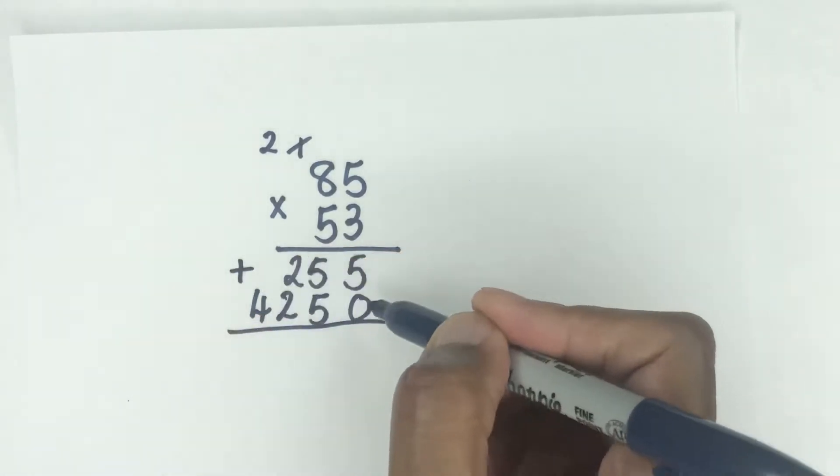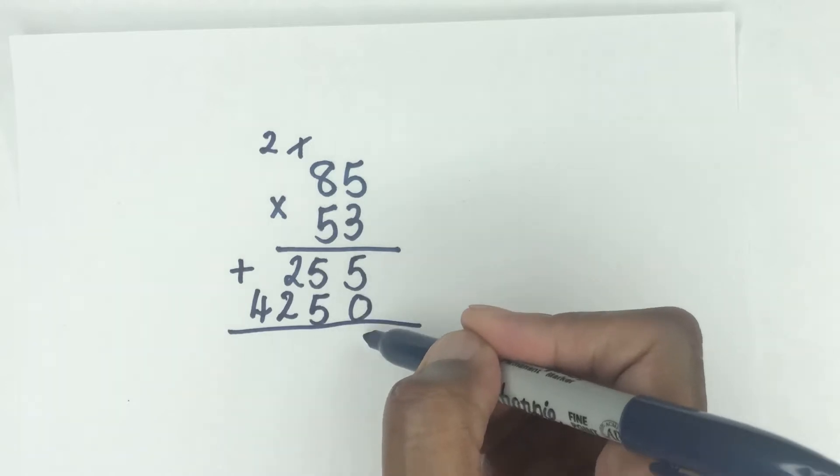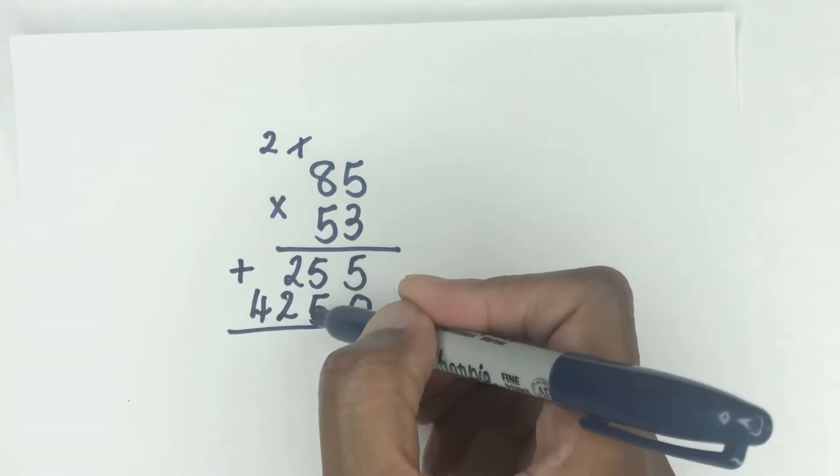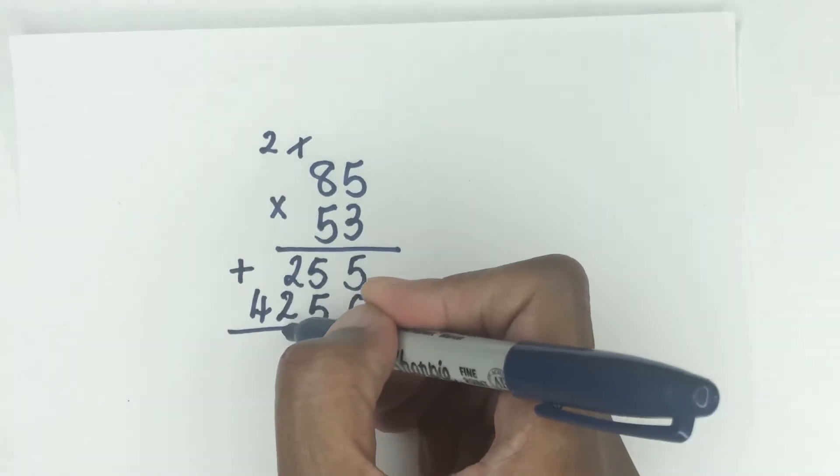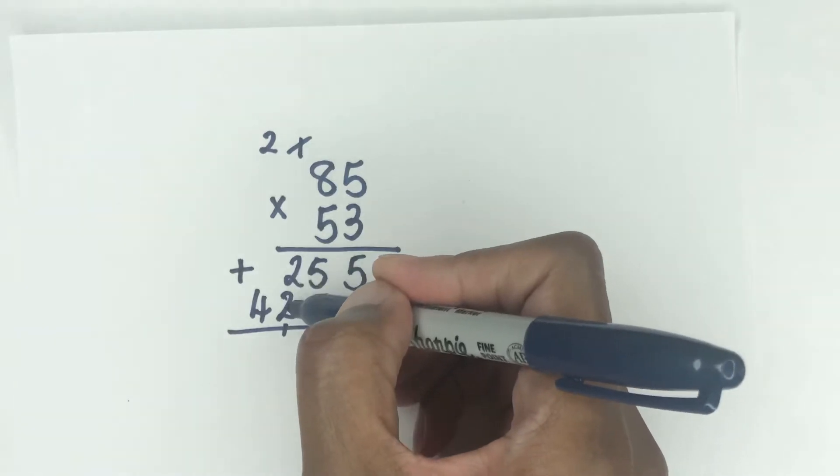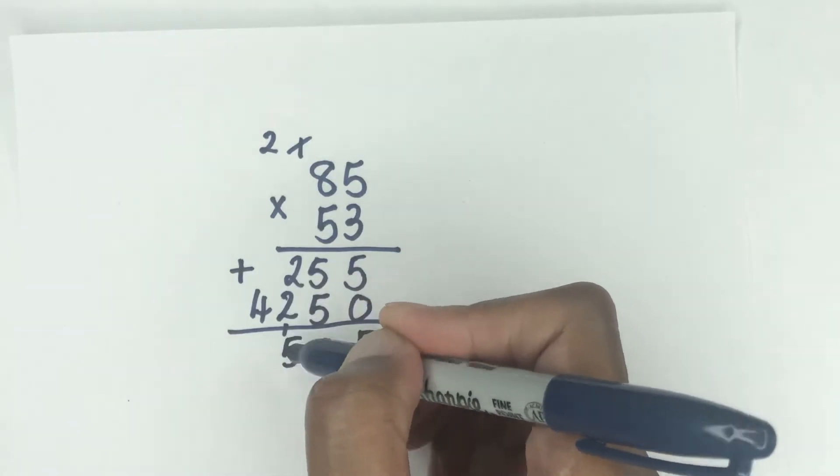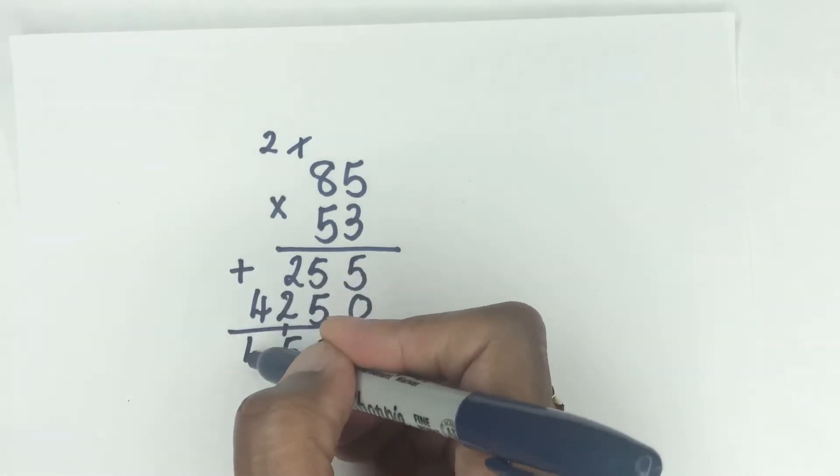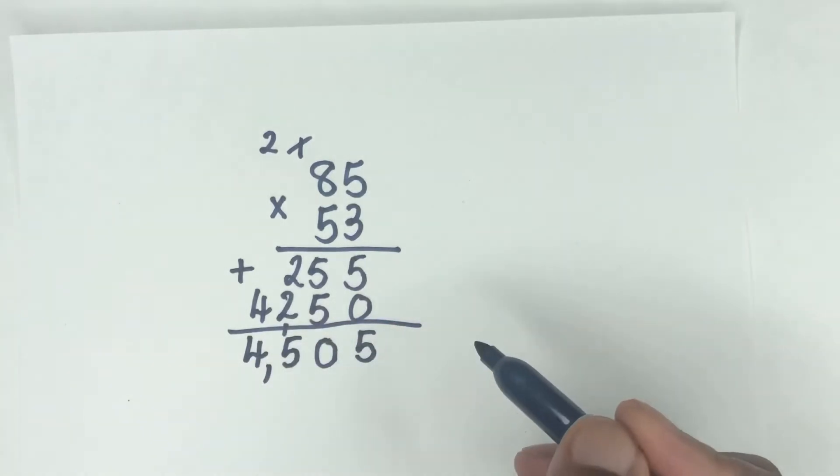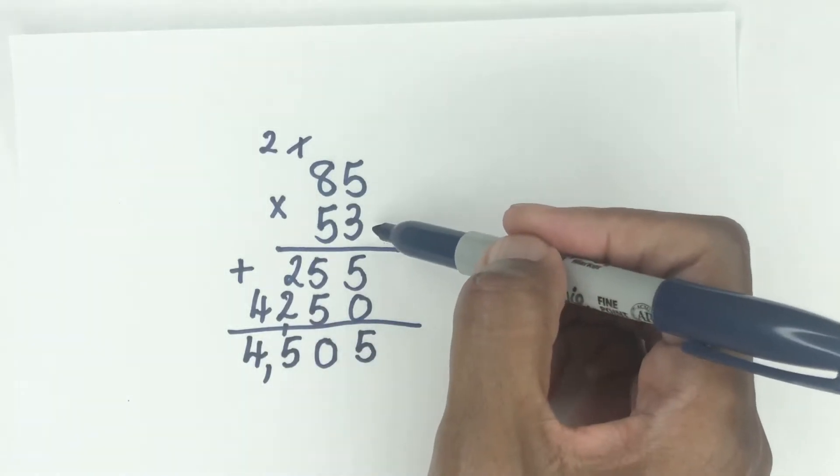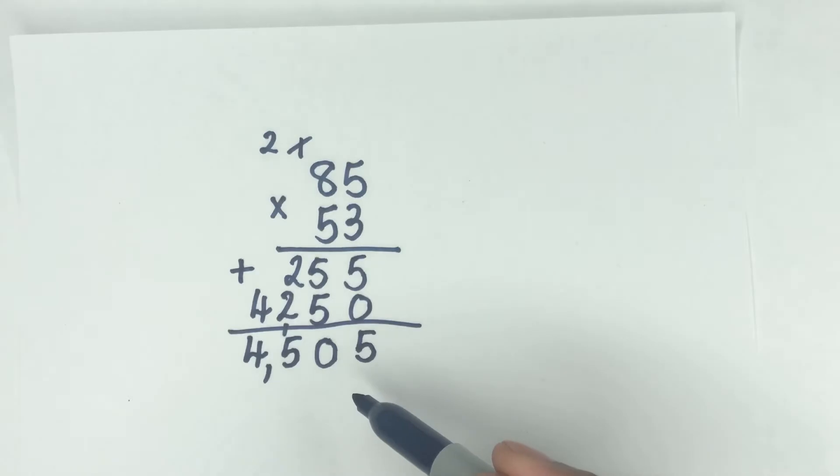And then five times eight is 40 plus this two is going to give us 42. And then here we're going to add this section. Five plus nothing is still five. Five plus five is 10. So we regroup there. Two plus two is four plus one is five. And then the four is by itself. So we just bring that down. So making the answer 85 times 53, 4,505.